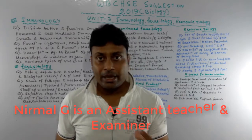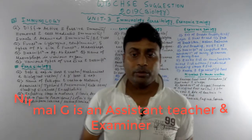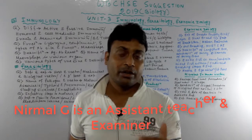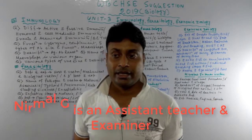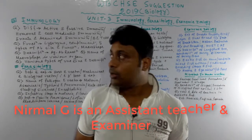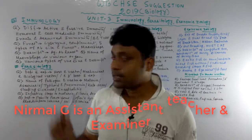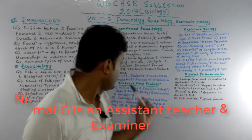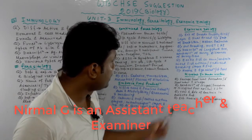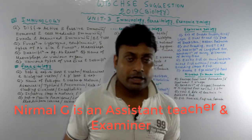Today we will talk about Unit 3, which is important in the West Bengal Council of Higher Secondary Examination. Unit 3 is called Immunology, Parasitology, Improved Food Production, Economic Zoology, and Microbes in Human Welfare.